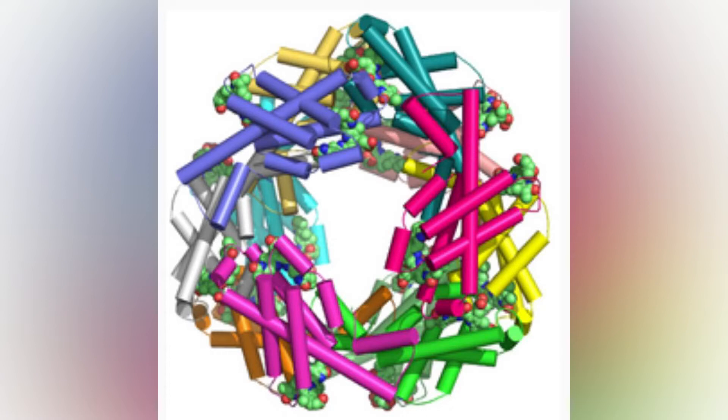Phycocyanin is a characteristic light blue color, absorbing orange and red light, particularly near 620 nanometers, and emits fluorescence at about 650 nanometers.